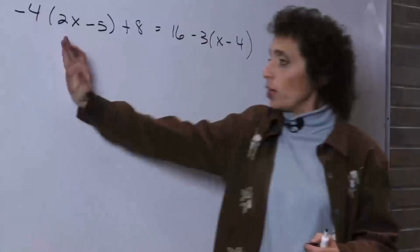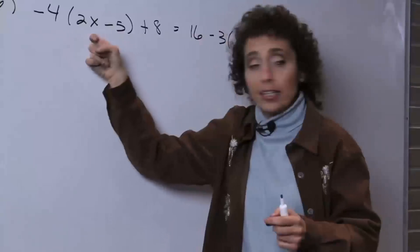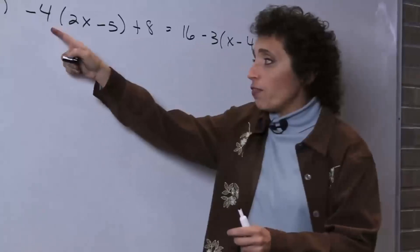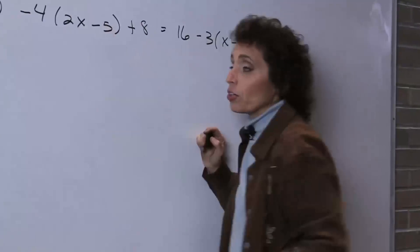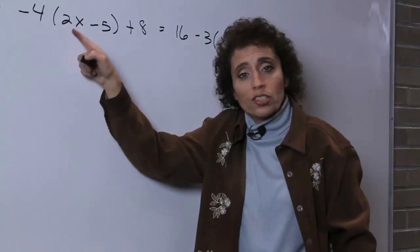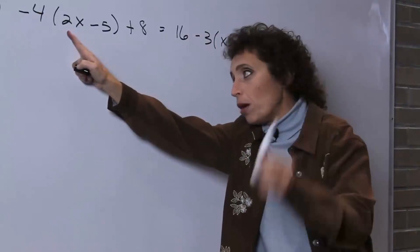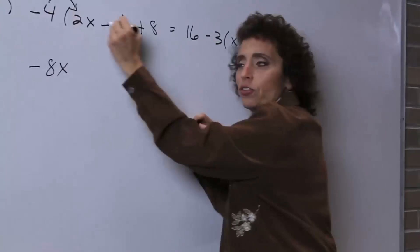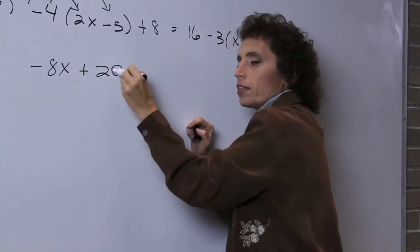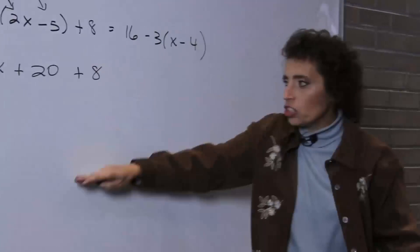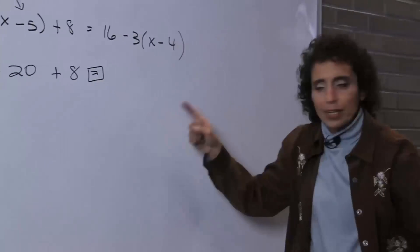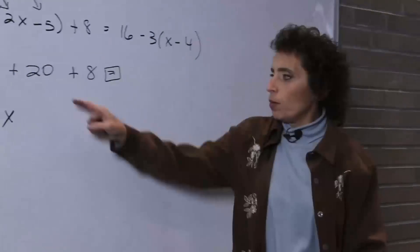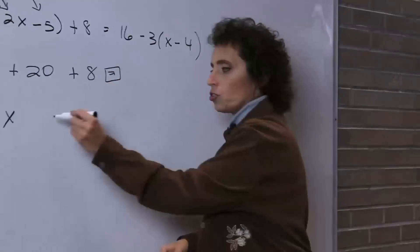Let's look at the left side of the equation. We have parentheses, but these two cannot be combined because they're not like terms — combined means added or subtracted. We have a negative 4 out here attached by multiplication, so we're going to distribute. Remember, the negative is going to change all the signs. As soon as I distribute, I must get rid of the parentheses. Negative 4 times 2x is negative 8x. Negative times a negative is a positive 20. Plus 8.